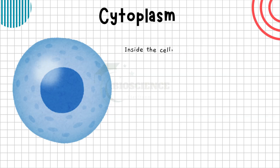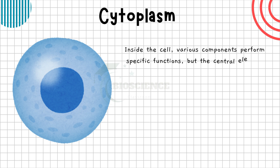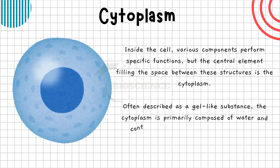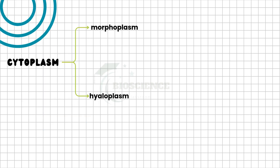Inside the cell, various components perform specific functions, but the central element filling the space between these structures is the cytoplasm. Often described as a gel-like substance, the cytoplasm is primarily composed of water and contains numerous organic and inorganic molecules. The cytoplasm is divided into two main parts: the morphoplasm and the hyaloplasm.